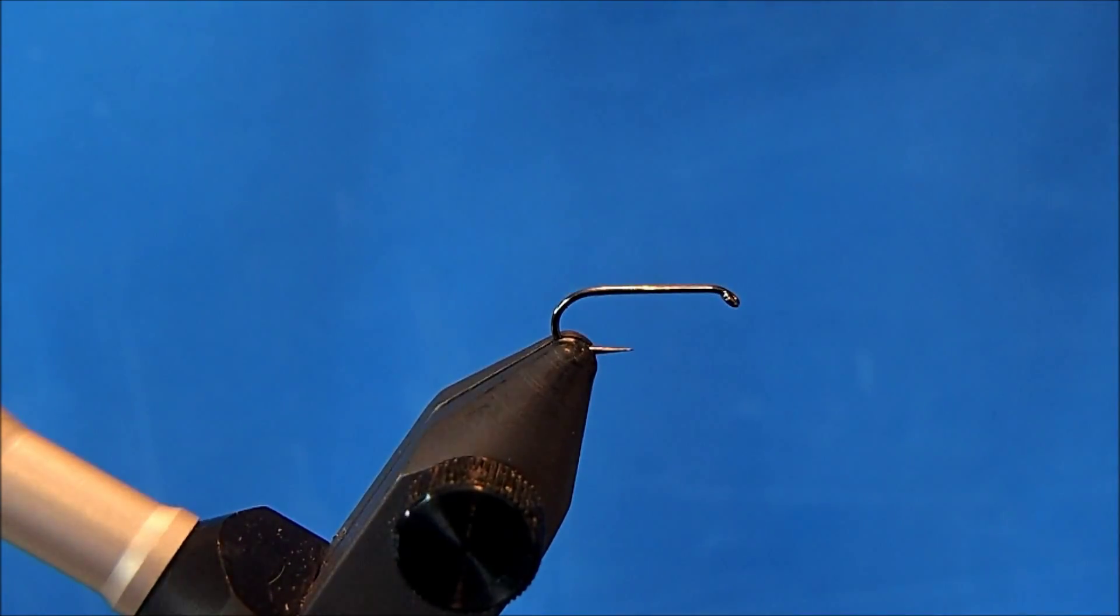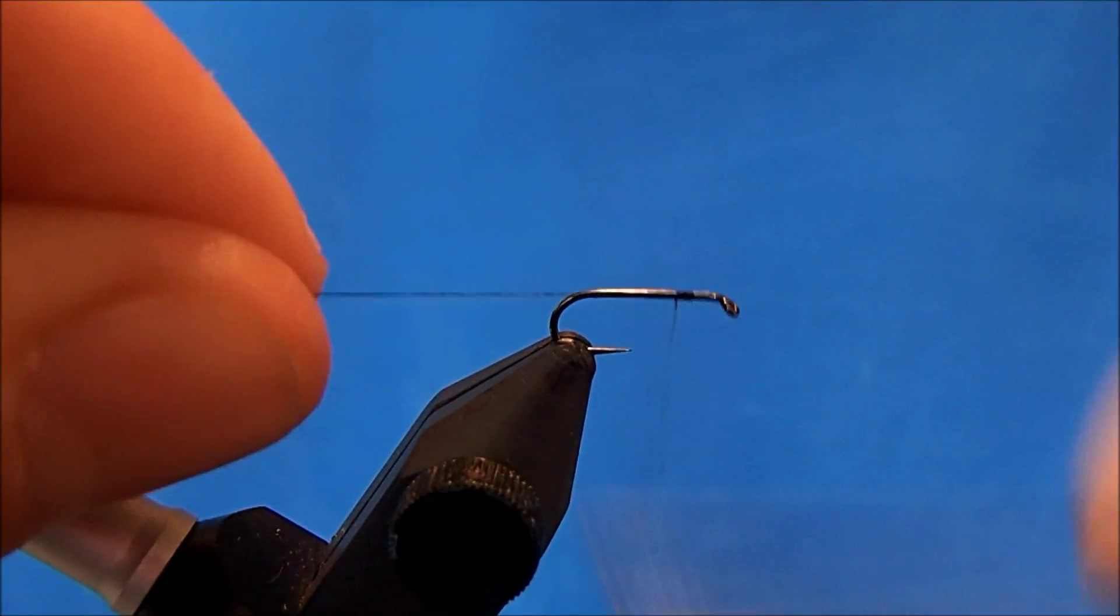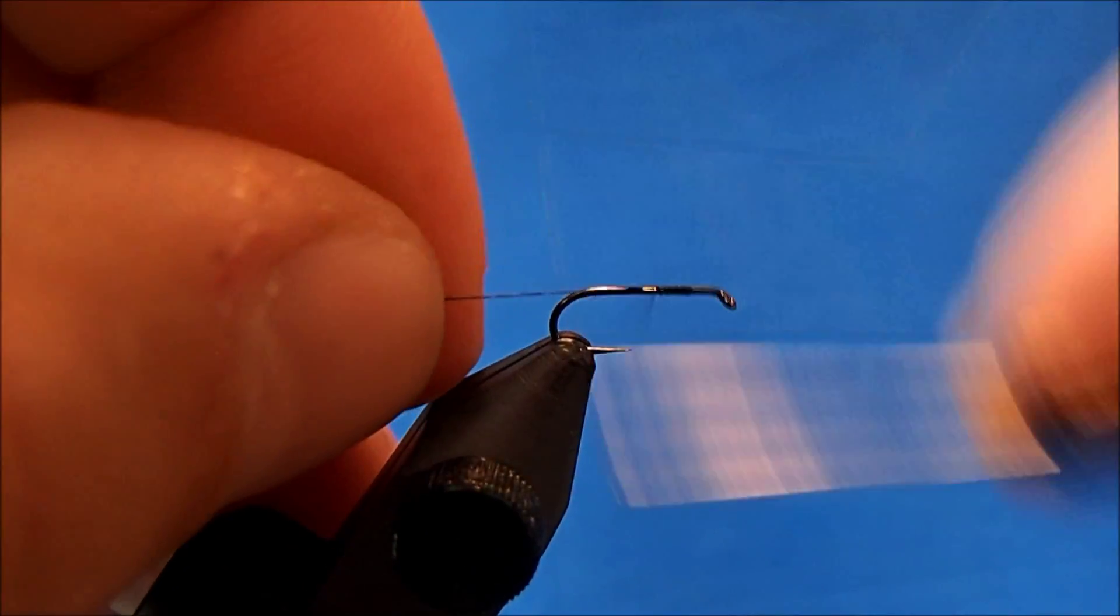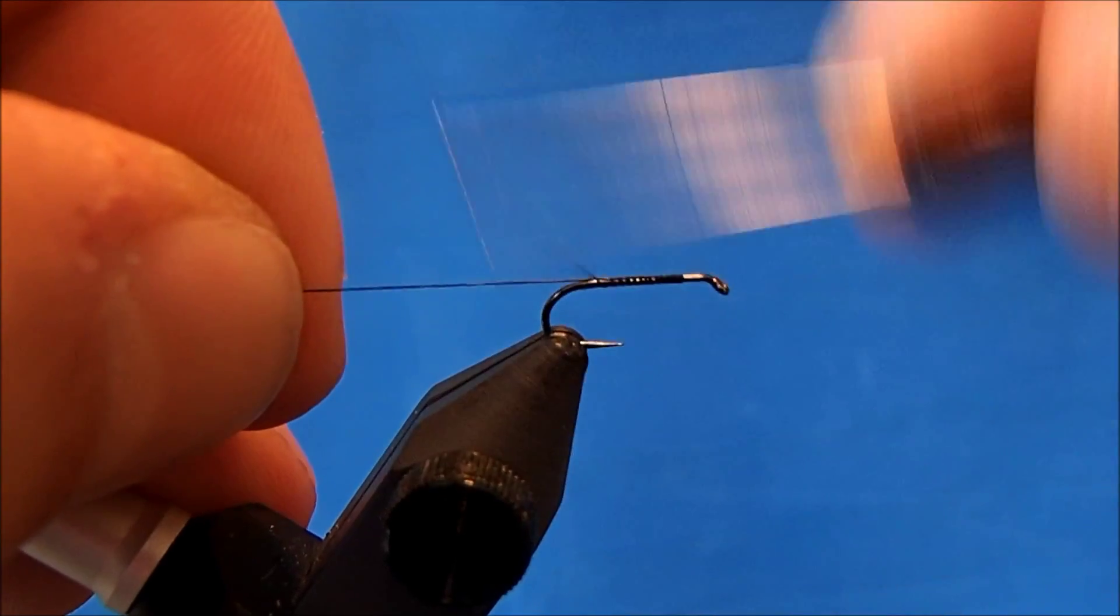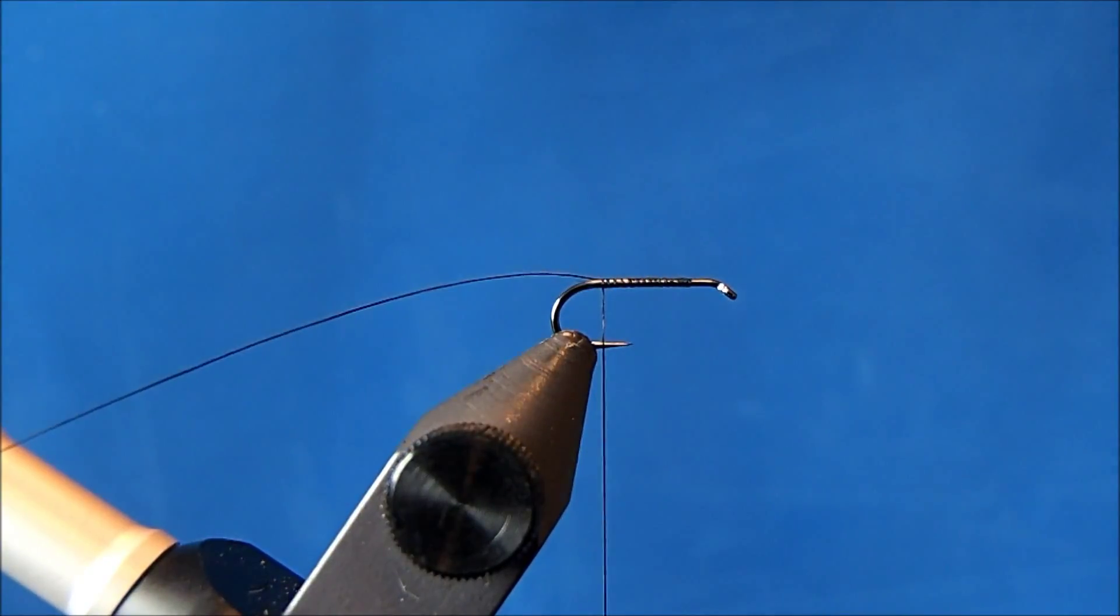The thread that I use is an 8-ought black, and again as you get smaller you can adjust this. I'll start this pretty much anywhere on the hook shank, but one thing you'll notice is I'm going to leave that tag end to the thread in there. I'm not going to remove that because I'm going to use that to help split my tail.